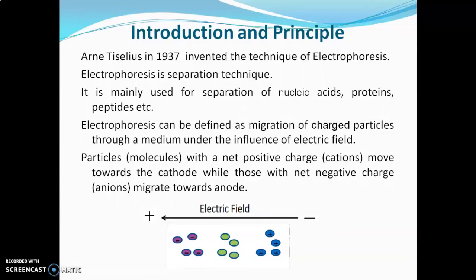In this way, electrophoresis can separate molecules from each other based on the charge and size of the molecule. In the case of DNA and RNA, these molecules carry a negative charge because of the presence of a phosphate group in their backbone, and that's why we can separate them by using electrophoresis.